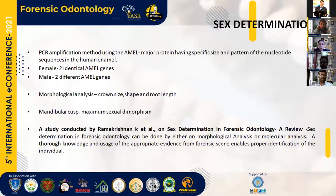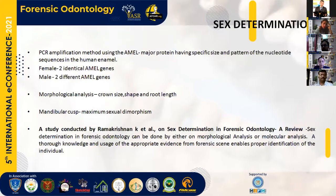Next is sex determination, which is mainly based on the AMEL gene, that is the amelogenin gene. The female has two identical amelogenin genes and the male has two different AMEL genes. Sex determination plays a major role through morphological analysis — that is the crown size, shape, and root length. The mandibular cusp shows maximum sexual dimorphism. The legal aspects of sex determination arise in cases of rape, potency, marriage, and identification.